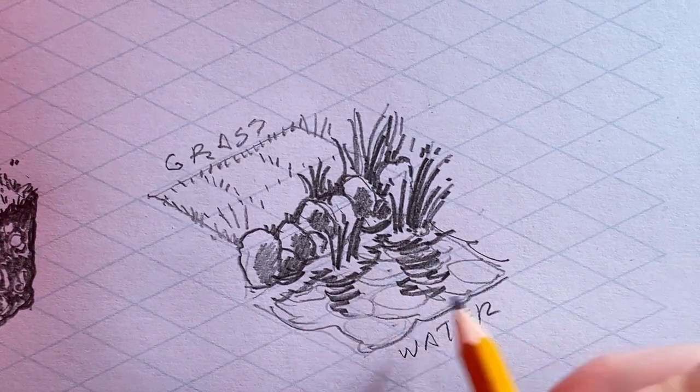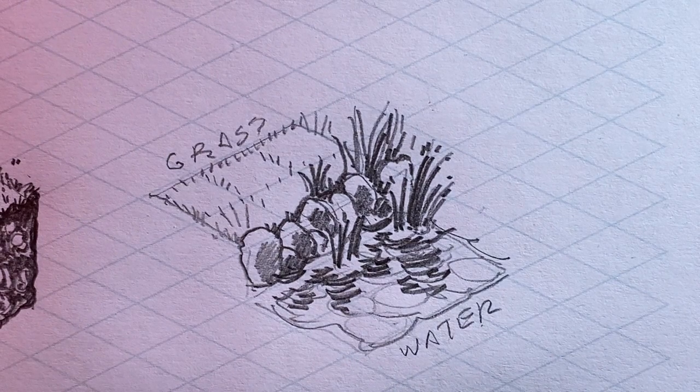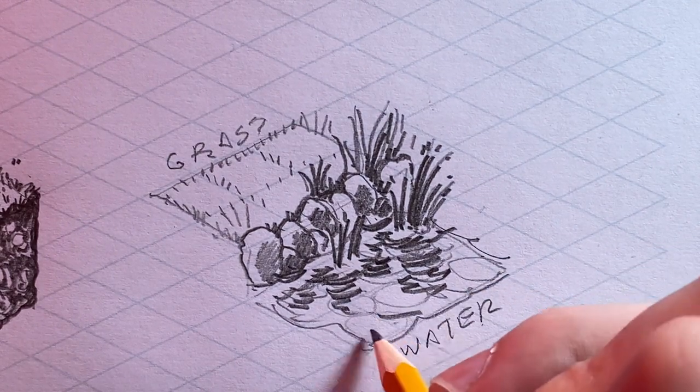that is going to let that luster, let that shine where that water kind of builds up as it runs into something. And then just draw the reflection with a bunch of these zigzags that droop down. And you're basically done.